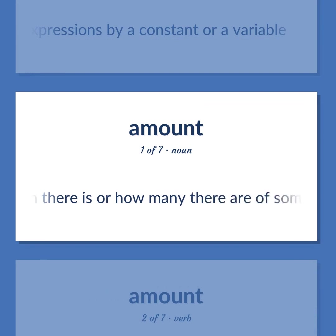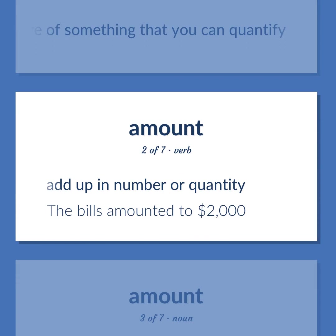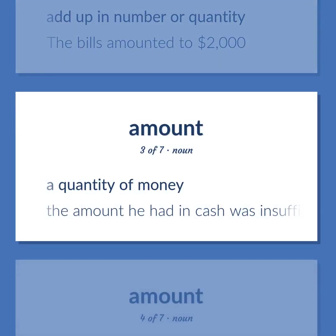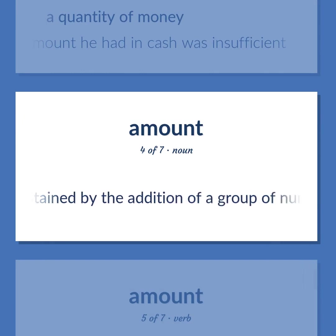How much there is or how many there are of something that you can quantify. Add up in number or quantity. The bills amounted to $2,000. A quantity of money. The amount he had in cash was insufficient. A quantity obtained by the addition of a group of numbers.